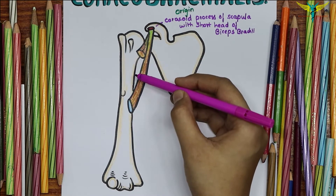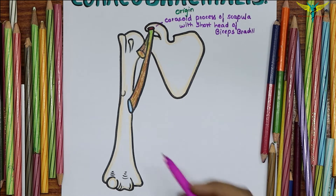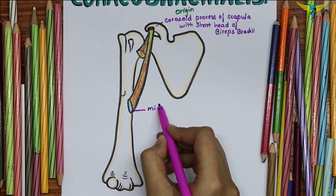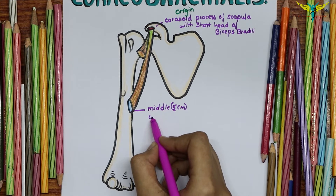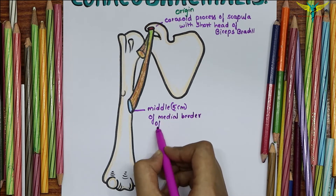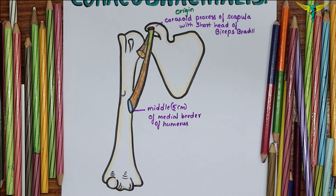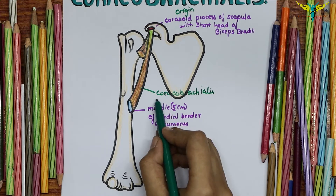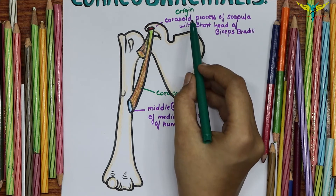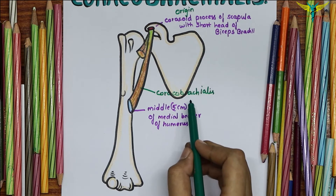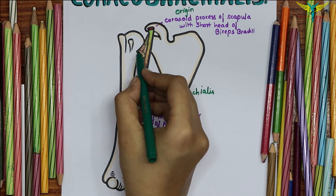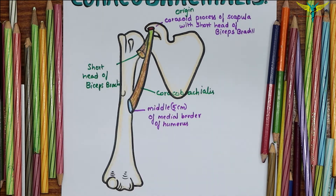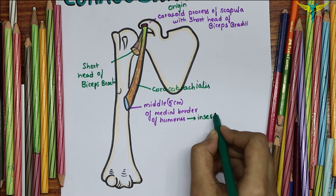The insertion of the coracobrachialis is into the middle of the medial border of the shaft of the humerus — specifically into the middle 5 centimeters of the medial border of the humerus. As the name indicates, 'coraco' refers to the origin from the coracoid process of the scapula, and 'brachii' means the arm.